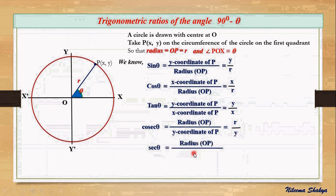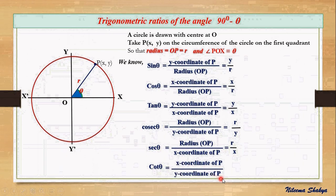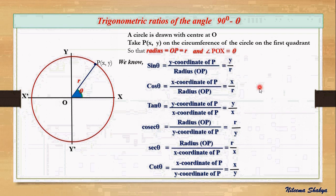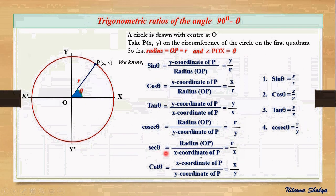And sec theta is the ratio of the radius to the x-coordinate of the point, r/x. Finally, cot theta is the ratio of the x-coordinate to the y-coordinate, x/y. Writing the conclusion: sin θ = y/r, cos θ = x/r, tan θ = y/x, cosec θ = r/y, sec θ = r/x, and cot θ = x/y.